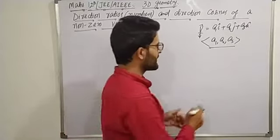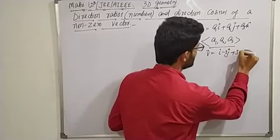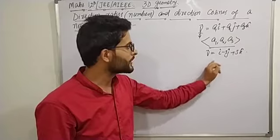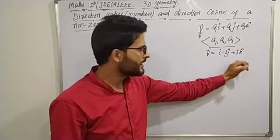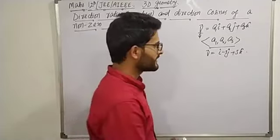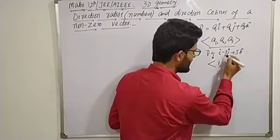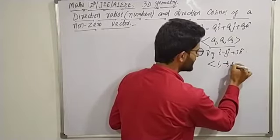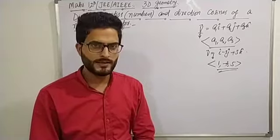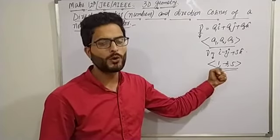Pretty simple — agar aapke paas koi vector V hai which is expressed as i minus 3j plus 5k, suppose you have a proper vector V resolved in terms of its components as i minus 3j plus 5k, then you can write its direction ratios. The direction ratios or direction numbers of this vector are the ordered three-tuple of scalar components: first scalar component 1, second scalar component minus 3, third scalar component 5.